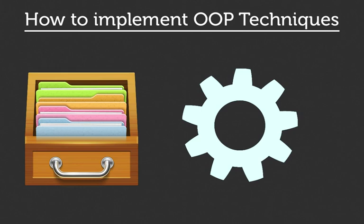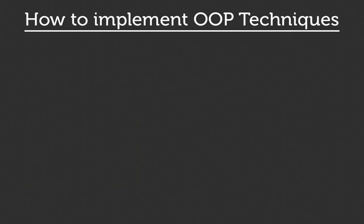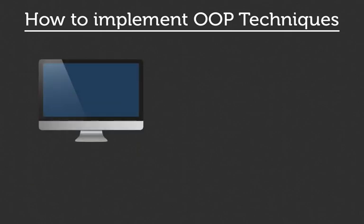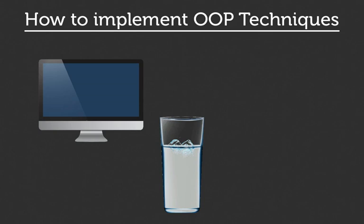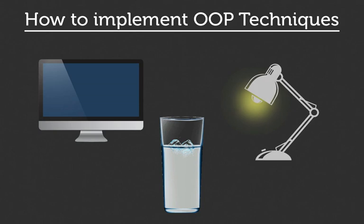When you start to dive into tutorials about object-oriented programming, you'll find that people use real-world objects as examples because in a big way, the world is very object-oriented. The idea is that as you look around you, you see yourself surrounded by these different objects. Objects are basically anything that you can give a noun to. For example, right now I'm surrounded by my computer, a glass of water, and a lamp.